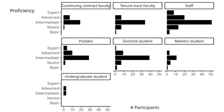When participants self-reported their proficiency with Git by status in their institution, staff were pretty proficient at an intermediate level, in line with doctoral students and postdocs, and decreasingly so for tenured faculty and continuing contract faculty — least alongside master's and undergraduates. We were interested to see that very few felt like experts, with more swaying on the cautious side of their proficiency.